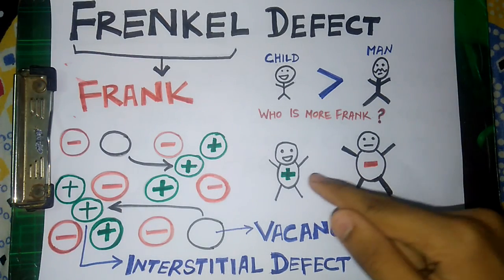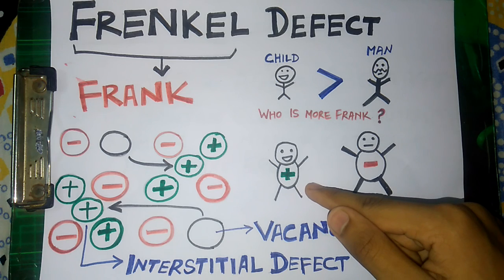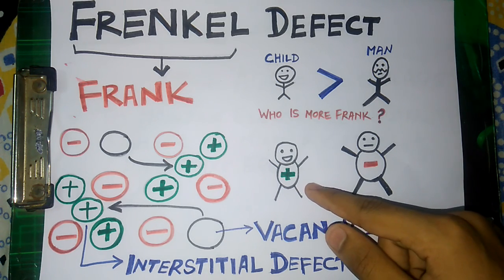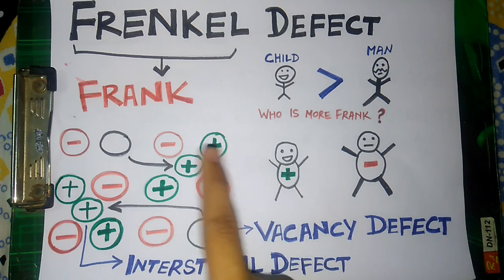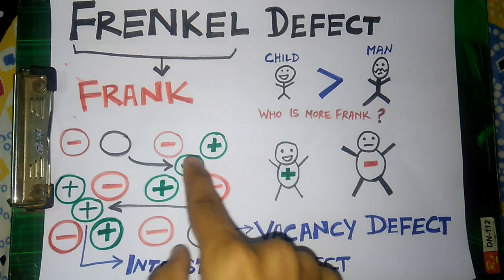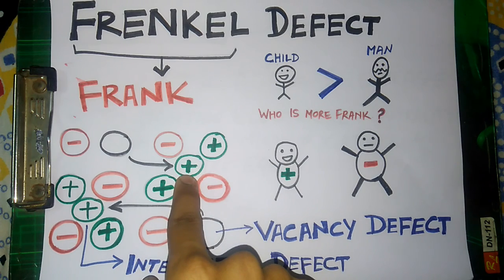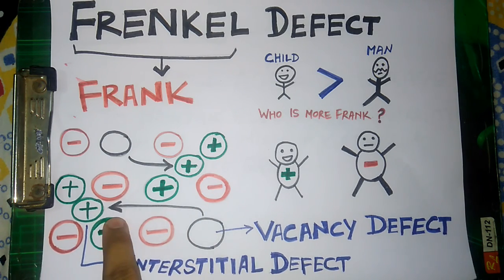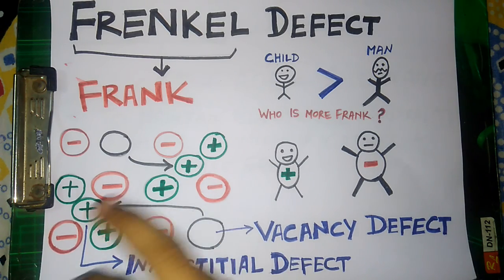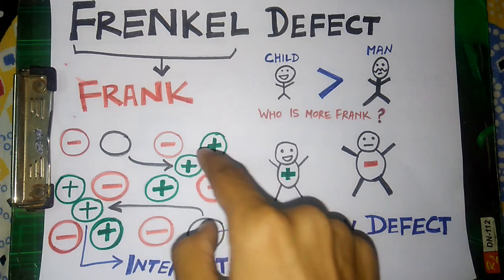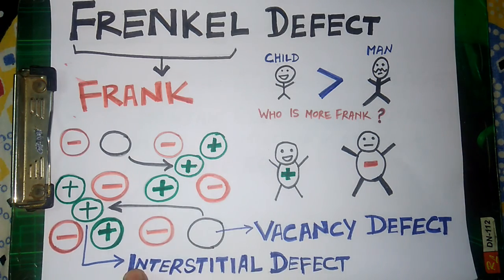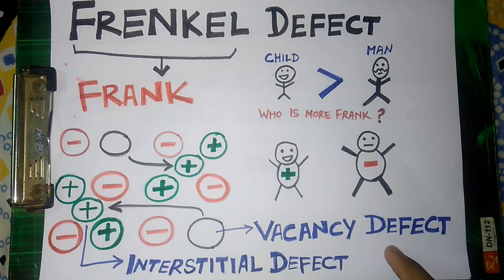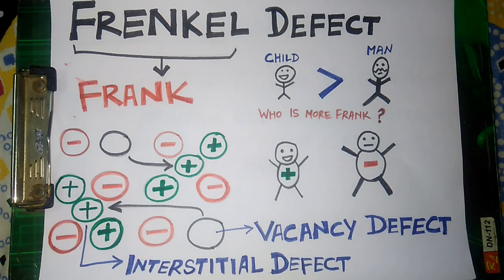Hence, a cation can easily mix up in the interstitial sites and create an interstitial defect. Here you can see that the cation gets mixed up in the interstitial sites easily. So the place from where it leaves creates a vacancy defect, and the place where it goes creates an interstitial defect. A vacancy defect and interstitial defect are simply English — you can learn them easily. And this was the way to learn the Frenkel defect.